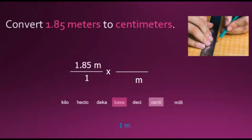The base unit is the one we select for a value of 1. Then, noting the number of spaces — each space having a value of 10 — we determine the number that goes on our other factor. So 10 times 10 gives us 100 centimeters equal to 1 meter. We take this equivalent value and express it as a conversion factor fraction with 1 meter in the denominator and 100 centimeters in the numerator.